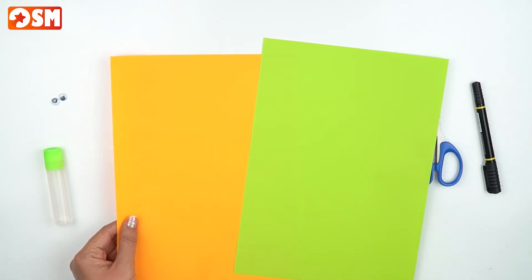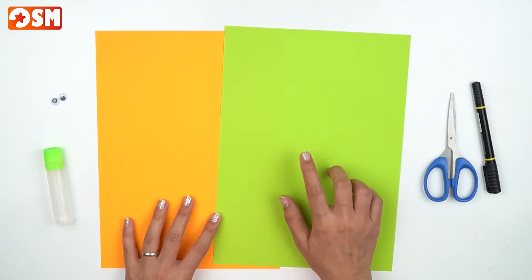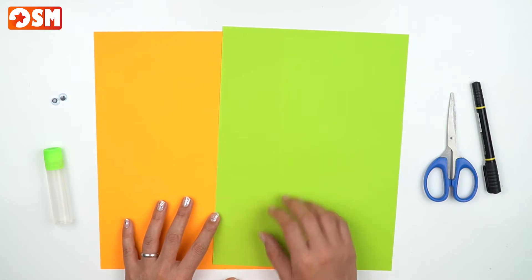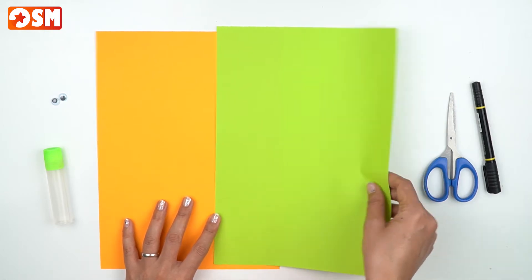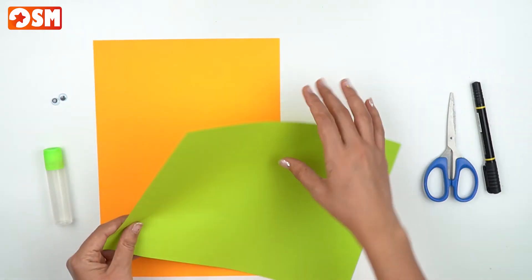As you see, I have green and orange paper. If you don't have colored paper, don't worry about that! You can color any white paper and then make a colorful snake.